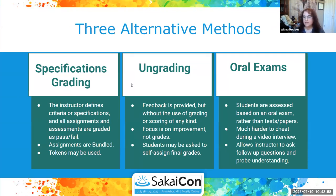Today I'm going to look at three different alternative methods and how I've set them up in Sakai. Specifications grading is the idea that the instructor constructs a list of specifications for all items due in the course, and everything is graded as pass/fail. There's no scaling of points, no numeric rubrics where you have a score of 89.1 and people email you trying to get bumped up to a 90.